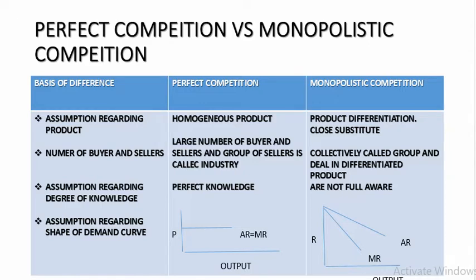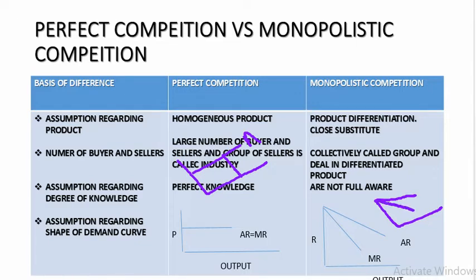Assumption regarding the shape of the demand curve: under perfect competition, AR equals MR and the price is determined by the industry — the graph is parallel to the x-axis. Under monopolistic competition, AR is greater than MR and they are downward sloping — MR lies below AR.